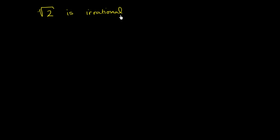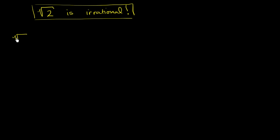What I want to do in this video is prove that the square root of two is irrational. I'm going to do this through a proof by contradiction, which is set up by assuming the opposite. Let's assume that square root of two is rational, and see if we lead to a contradiction. If we get a contradiction by assuming the square root of two is rational, then we have to deduce that the square root of two must be irrational.